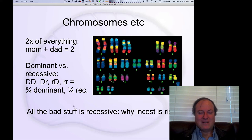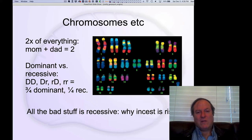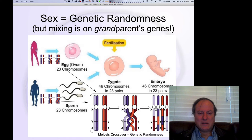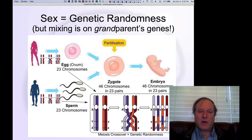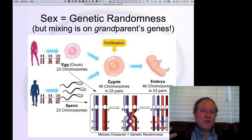If you have sexual reproduction through people who are closely related, you're going to end up with a greater chance of recessive-recessive cases. Those are the ones that evolution hasn't filtered out over time, because it only occurs in one quarter of cases statistically. One interesting thing is that genetic randomization — this diversity of genetic expression that is really the fuel for evolution — doesn't actually occur directly between mom and dad.